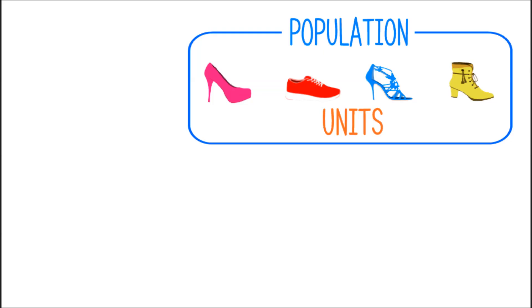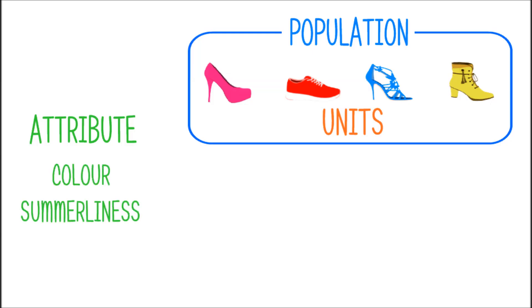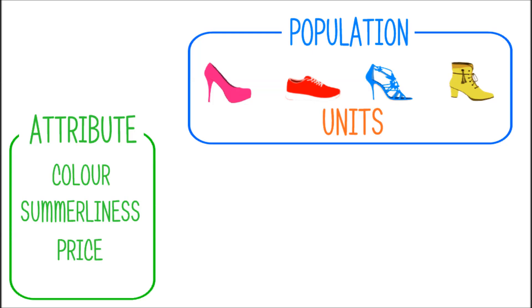All 4 statistical units are pairs of shoes, so in that respect they are all the same. But with regard to other properties — and these properties we call attributes — they are different. The attributes that Lily used to distinguish the shoes were color, summerliness, and price. However, that was only Lily's selection of attributes; she chose the ones that are important to her.